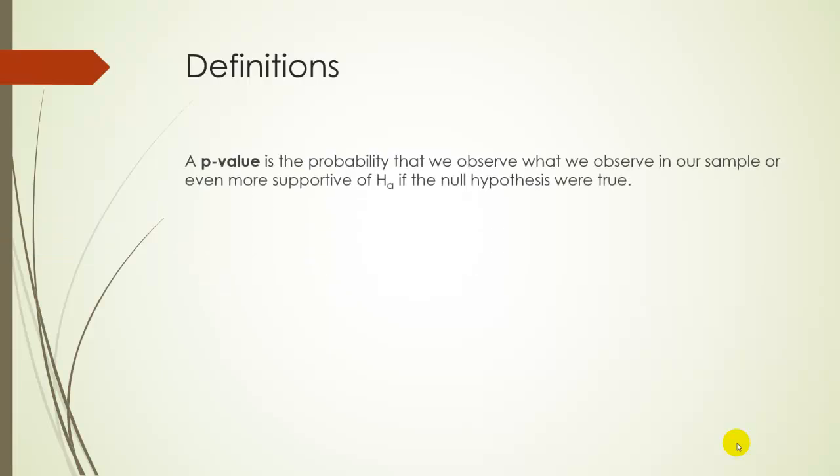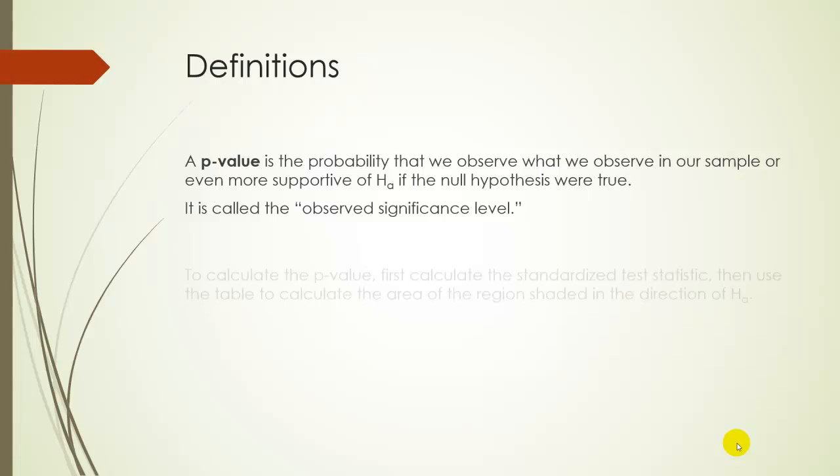Just some definitions to start off with. A p-value is the probability that we observe what we observe in our sample, or even more extreme, more supportive of HA, if the null hypothesis were actually true. This is called the observed significance level. Remember, the alpha value is called our significance level. The p-value is called the observed significance level, and there's a reasoning for this.